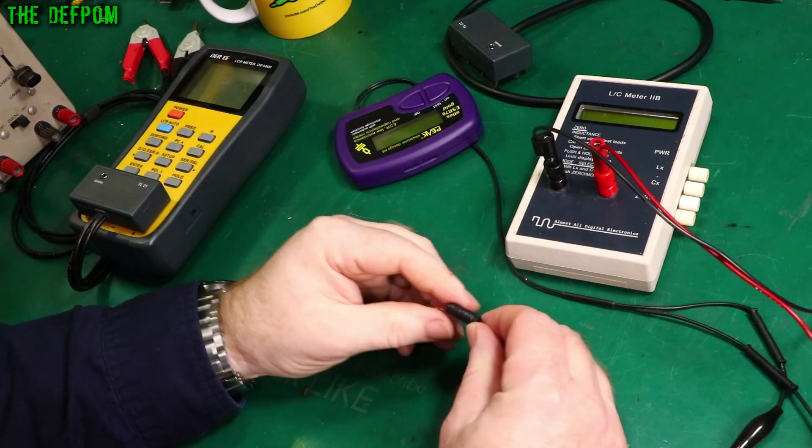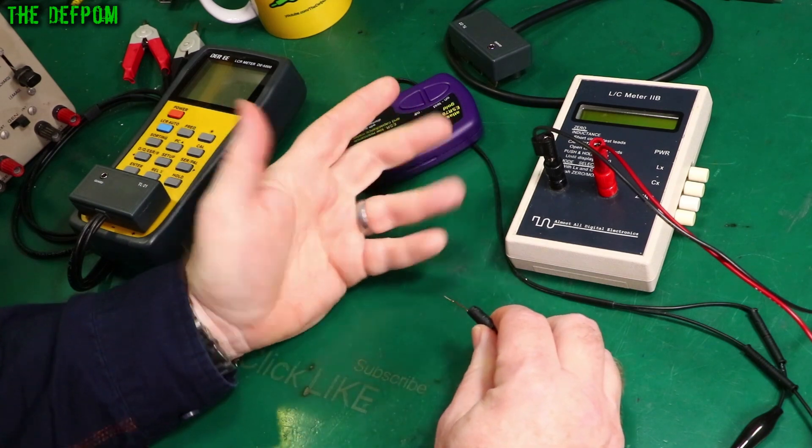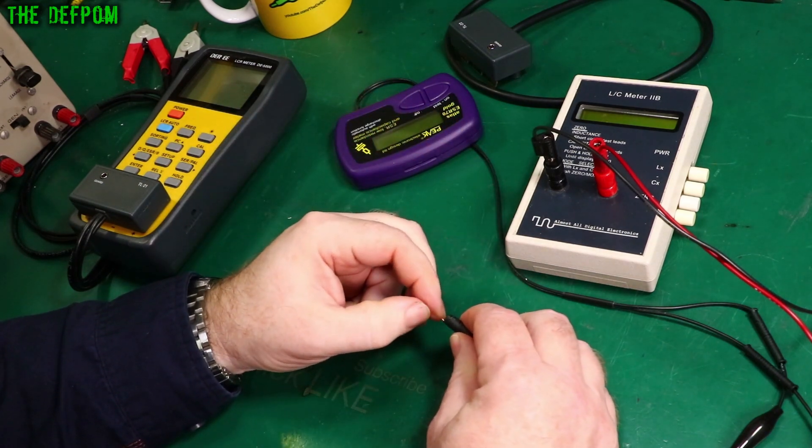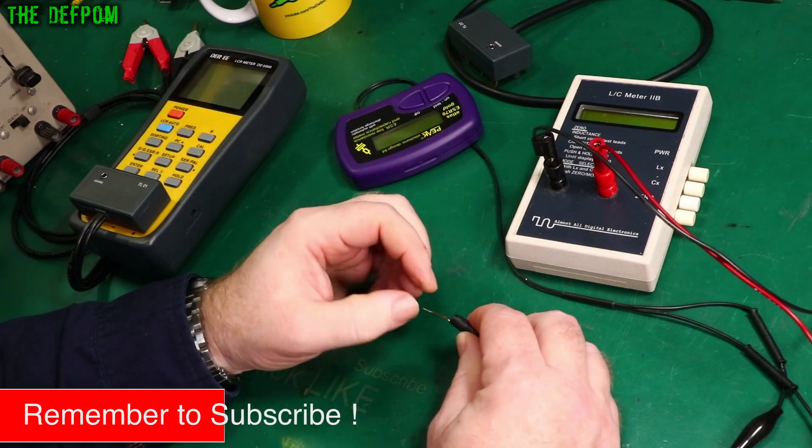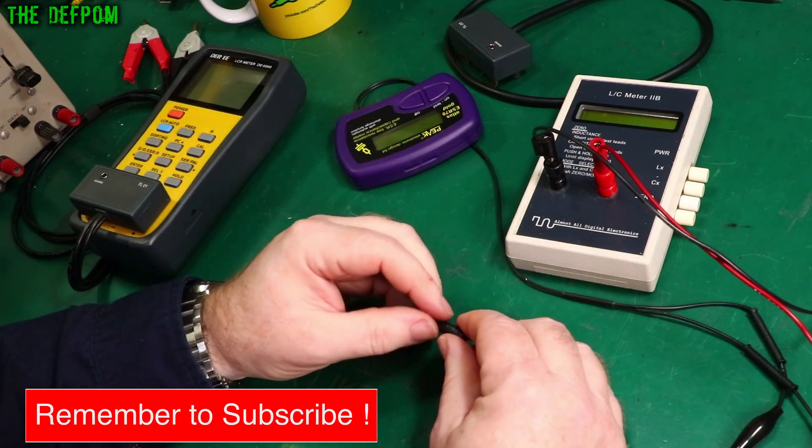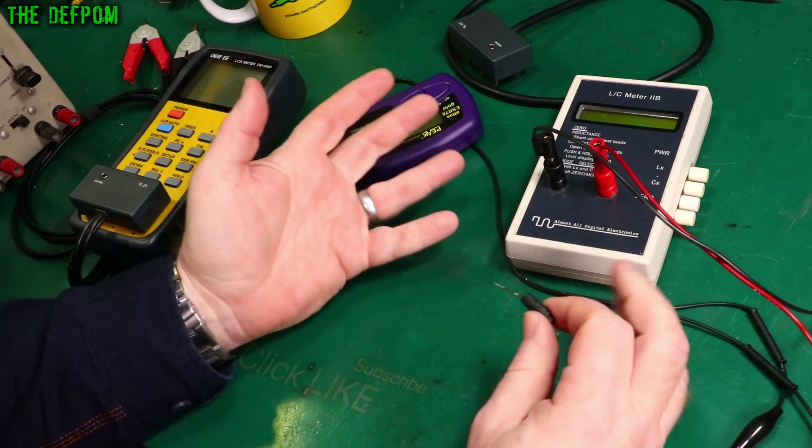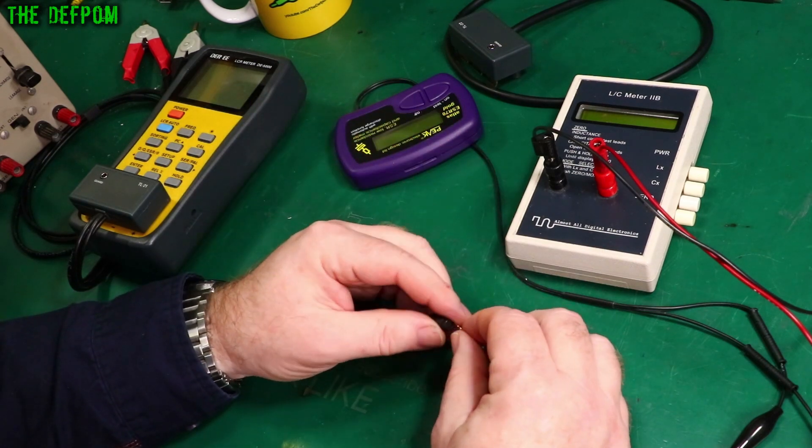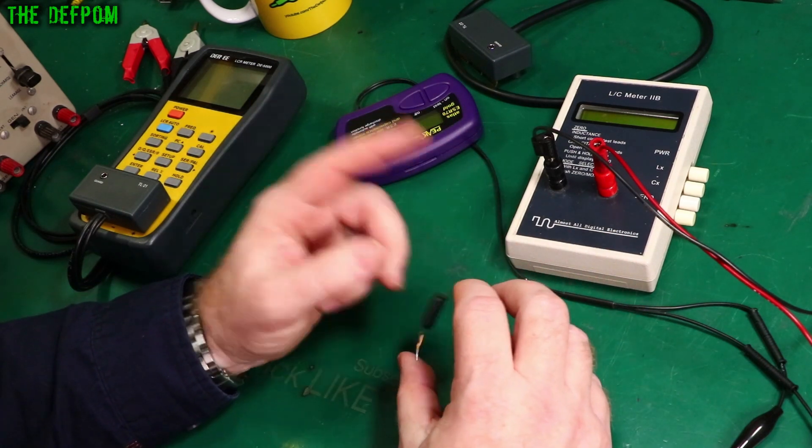So I mean there's lots of options out there. There's loads of different testers. You've even got things like the 328s. Those little Chinese testers which can do some kind of testing as well. They're cheap. They can do quite versatile things but I don't know how much I really trust those things. I do actually have one.